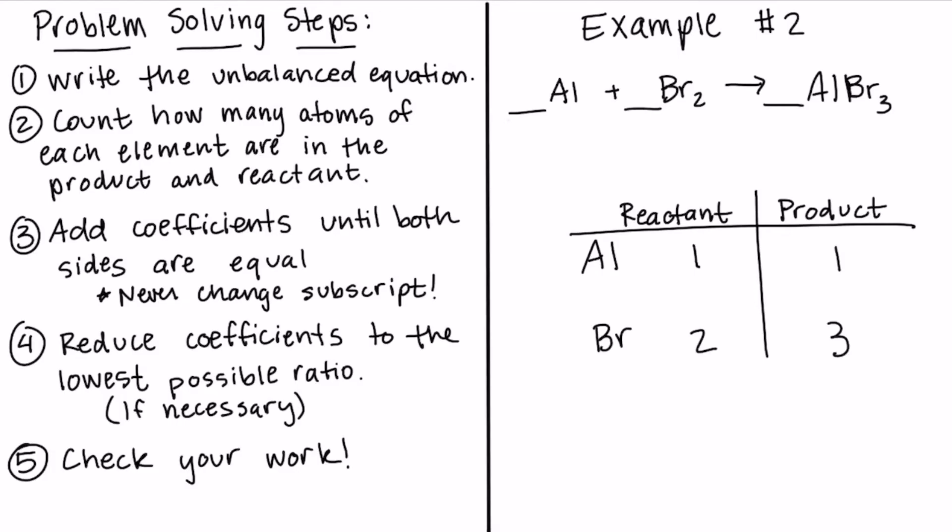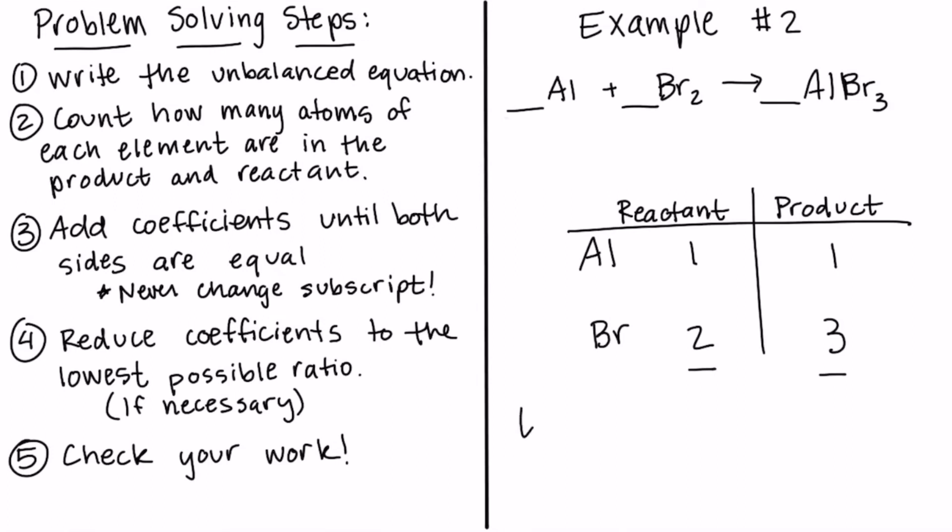Now we have to add coefficients. So the aluminum is balanced, but the bromine, we've got two in the reactant, three in the product. So what we have to do here is find the least common multiple of two and three in order to get them to equal the same number. So the least common multiple between two and three is six.